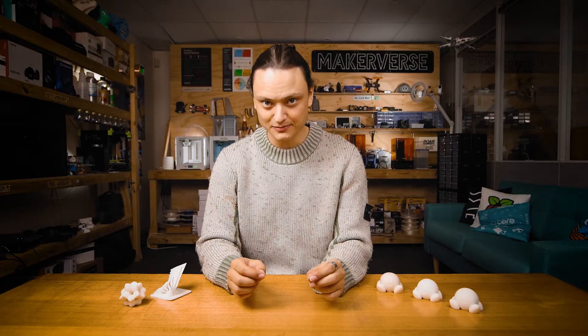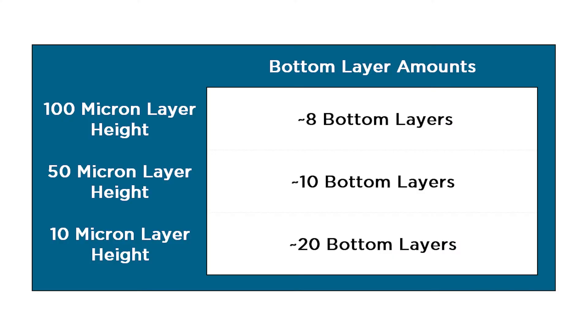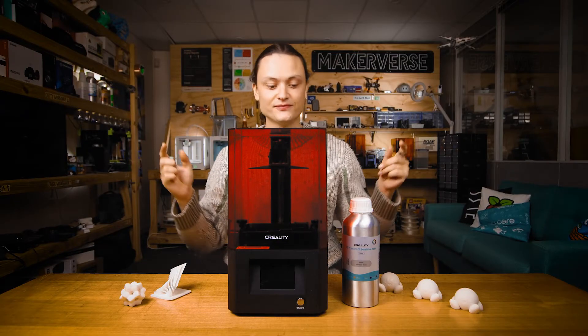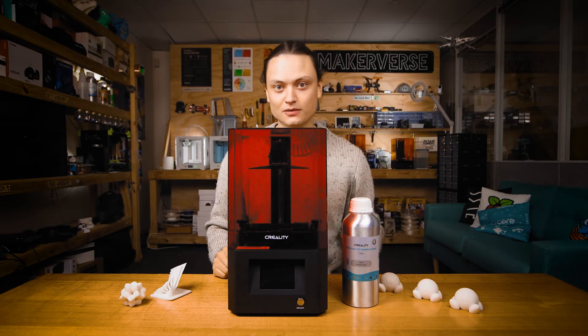When 3D printing a model, the bottom layers are the first few layers that are exposed to the UV light. If you print smaller layer heights, you will want more bottom layers. Just by being aware of this and accommodating for it, you won't end up with prints falling off the build platform. On screen now are my general bottom layer amounts that I have been using for this monochrome 3D printer and resin combo.